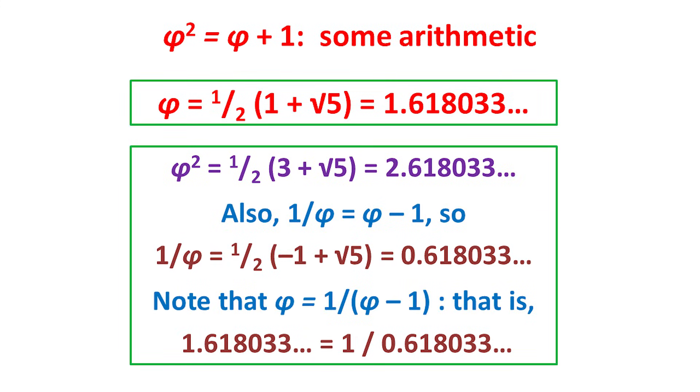The number phi is the positive solution of the quadratic equation x squared equals x plus 1, and is one half of 1 plus the square root of 5, or 1.618033 etc., an irrational number which goes on forever.